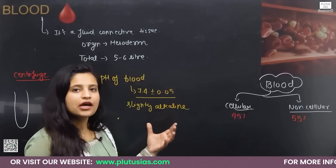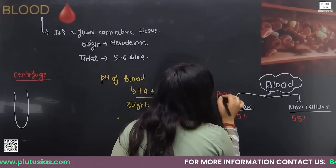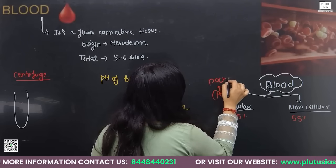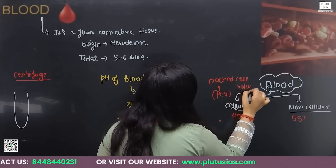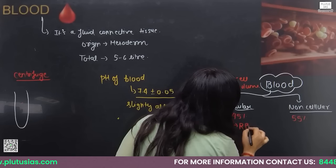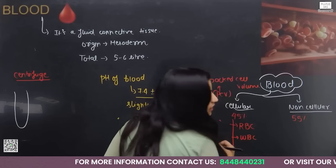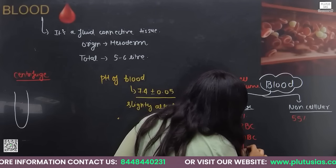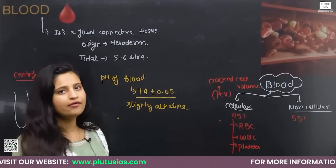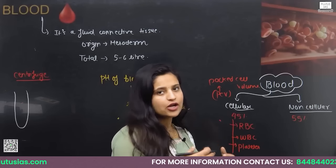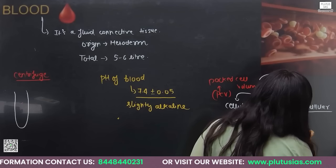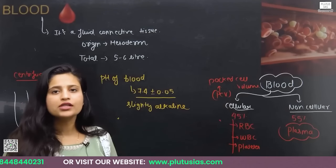The cellular components are also known as PCV — packed cell volume. In cellular components, we have three types of cells: RBC (red blood cells), WBC (white blood cells), and platelets. In the non-cellular components, as the name indicates, they do not have any type of cell. It is a straw or yellowish colored material, which is your plasma.